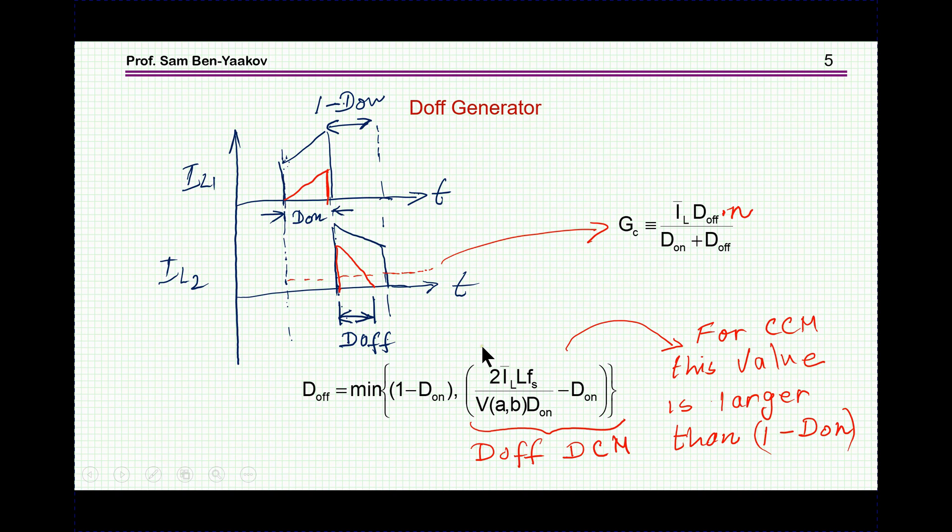Now, what about DCM, discontinuous current mode? In this case, the current of the primary starts from zero, and then goes to a certain value, and then the output sees this value, actually reflected at the output, and the current goes to zero, so we have an effective DOFF, which is different from 1 minus DON, in fact, it's shorter here.